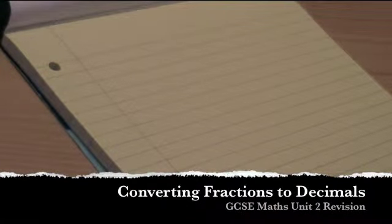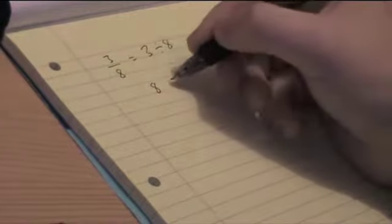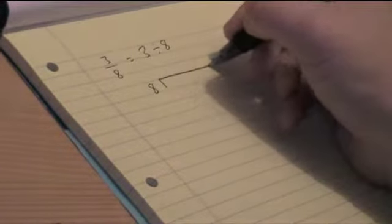Converting fractions to decimals using division. First off, 3 over 8. That's the same as 3 divided by 8. So I can use this method. Put the 8 on the outside, 3 on the inside.